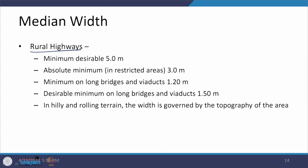For rural highways, the minimum desirable median is 5 meters and the absolute minimum in restricted areas is 3 meters. For bridges, long bridges, and viaducts, the minimum is 1.2 meters but desirably 1.5 meters should be provided. For hilly and rolling terrain, the topography determines feasible widths — the total available width minus the number of lanes and any footpath provision gives what can be allocated as median width.